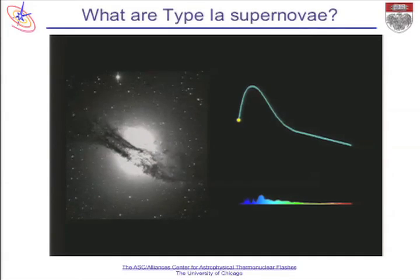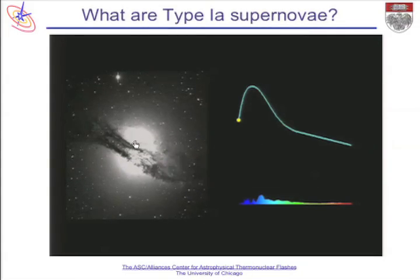It's also referred to as Type Ia supernovae. What I've shown you here is a galaxy, and you'll see a bright point of light come up. One of the key things about these thermonuclear supernovae—and all supernovae—is that they outshine their host galaxies.